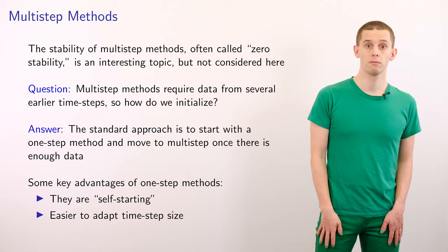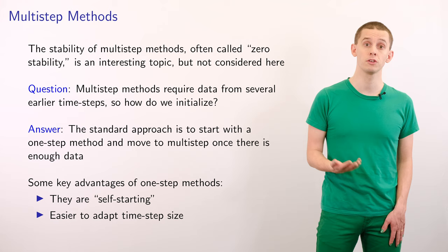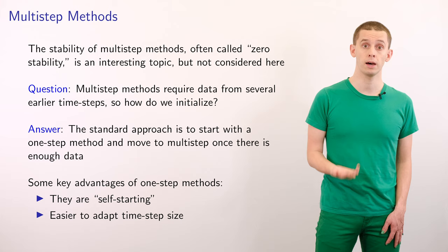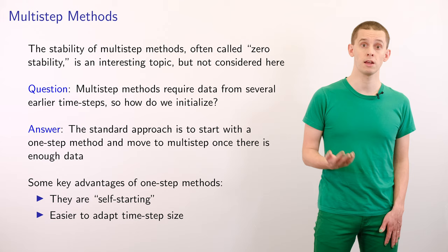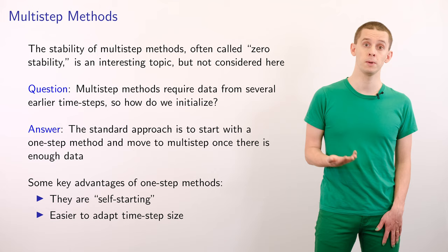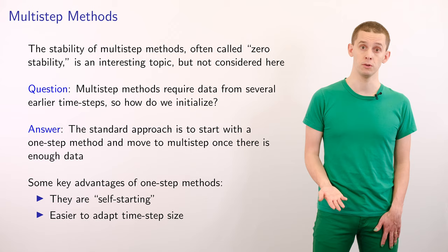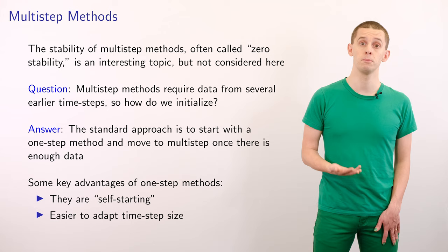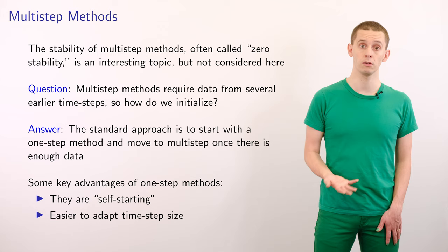The stability of multistep methods, often referred to as zero-stability, is an interesting topic, although we won't consider it in detail here. Another issue with multistep methods is how to initialize them: since the multistep method involves several earlier time points, when we first begin an integration we might not have those points available. The usual approach is to begin with a one-step method and then switch over to a multistep method once enough data is available. For some problems, multistep methods can be an attractive choice as they achieve higher-order accuracy with relatively little computational work.